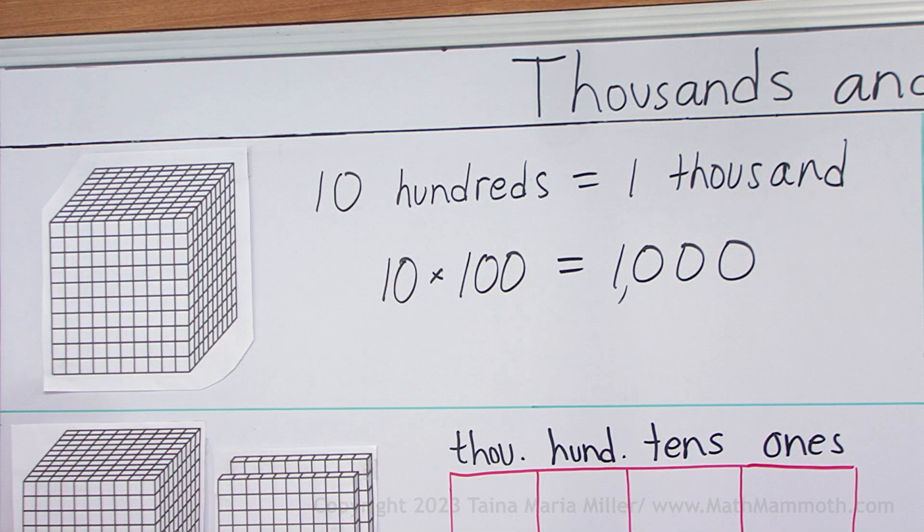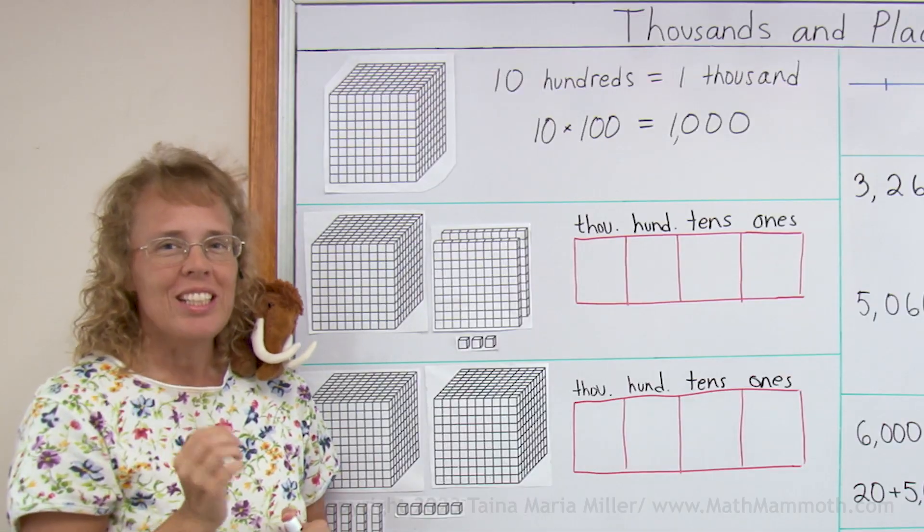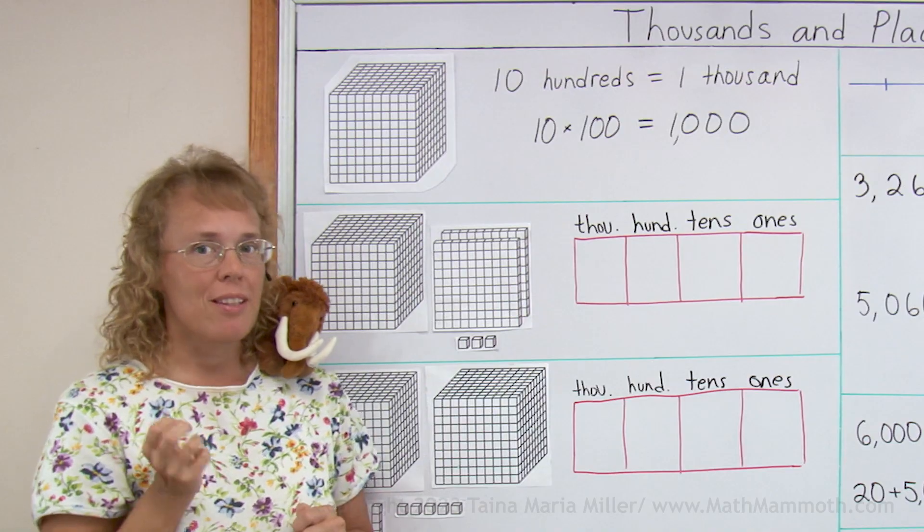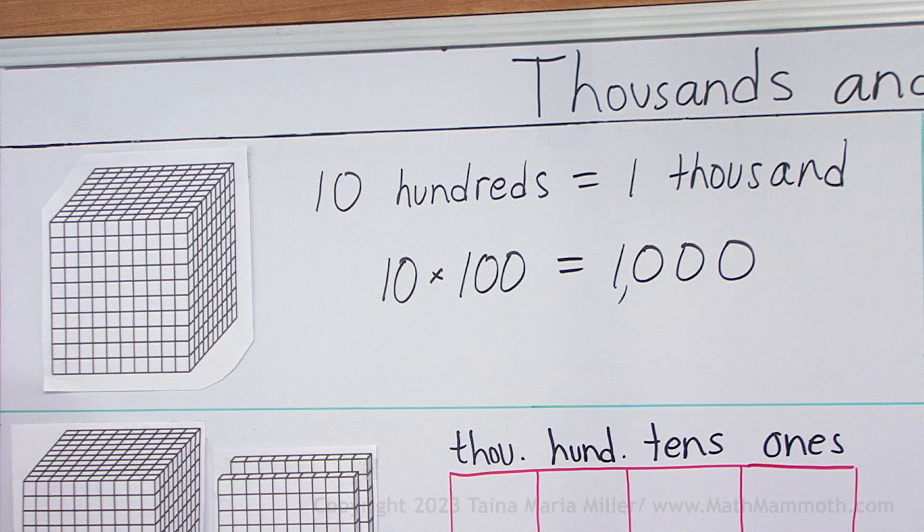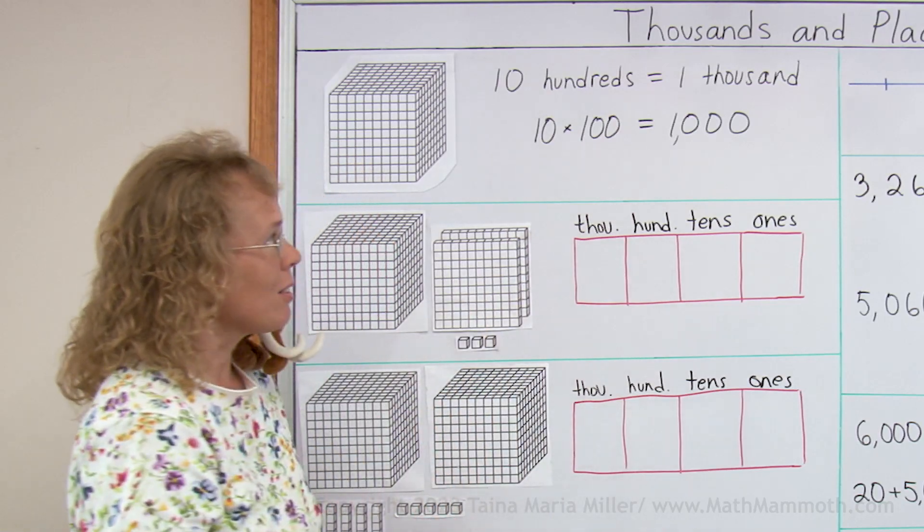Here we have a box that has actually one thousand little cubes in it. And as you already know, ten hundreds makes one thousand. You can see one hundred here at front, it's like a hundred flat and there's ten of them end to end, so that makes one thousand. And we write it like this with four digits.